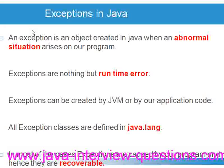An exception is an object created in Java when an abnormal situation arises in our program. Whenever an abnormal situation arises, the JVM will create an exception object for us. For example, if we take a NullPointerException, we get a NullPointerException.